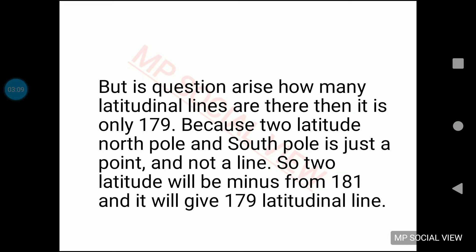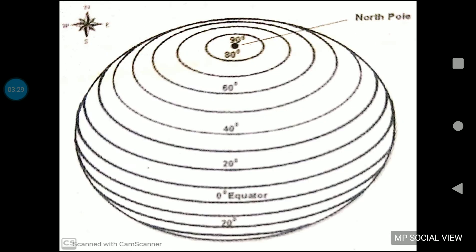Now if you are asked how many latitudinal lines there are, you have to answer 179. If they ask how many latitudes there are, the answer is 181. But if they ask how many latitudinal lines there are, you write 179, because you subtract 2 from 181. As you can see in the picture, the north pole is also a latitude but it is not a line — it is just a point. Similarly, the south pole is also a latitude but it is just a point. So at 90 degrees, the latitude is not a line, it is just a point.